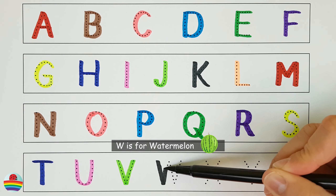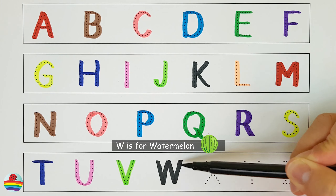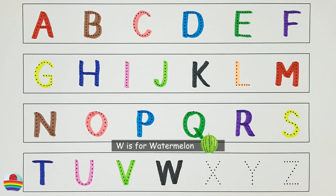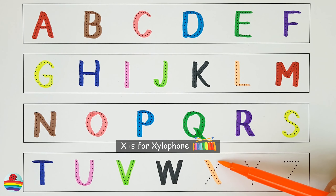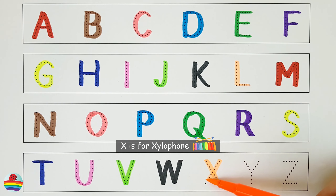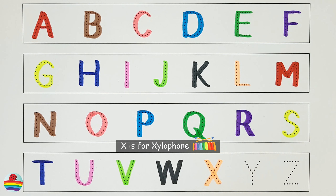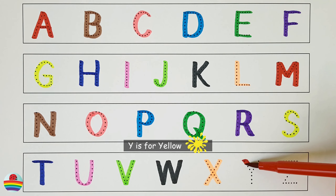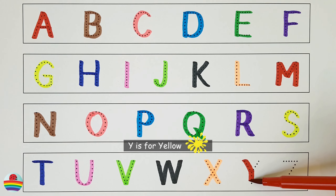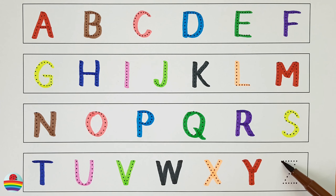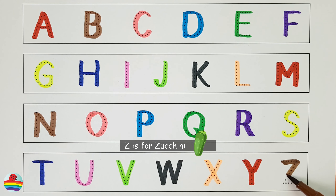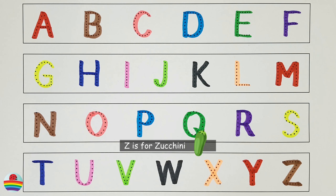W. W is for Watermelon. W. X. X is for Xylophone. X. Y. Y is for Yellow. Y. Z. Z is for Zucchini. Z.